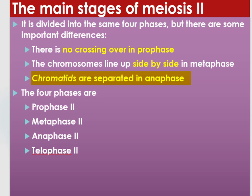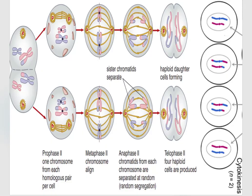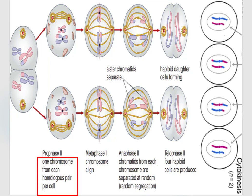Chromatids are separated in anaphase 2, but in meiosis 1 at anaphase 1, chromosomes are separated. The four phases are prophase 2, metaphase 2, anaphase 2, and telophase 2. In meiosis 2, the two haploid cells produced from meiosis 1 automatically enter prophase 2. In prophase 2, one chromosome from each homologous pair remains, the centrioles move to opposite poles, and spindle fibers appear.